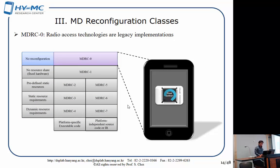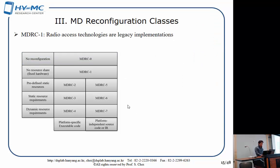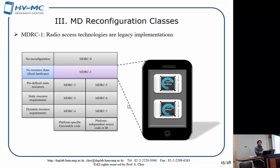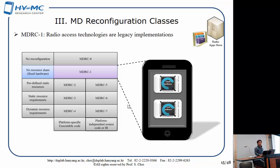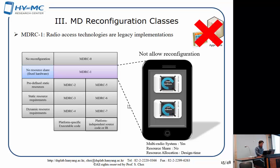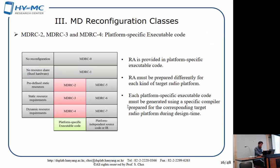Class 0 is equipped with a fixed hardware modem chip, so software download is not allowed. Class 1 is equipped with multiple fixed modem chips — say, one for WCDMA, one for LTE, one for Wi-Fi — and still does not allow software download. From class 2 and below, the mobile device allows software download. Classes 2, 3, and 4 use executable code. Classes 5, 6, and 7 download platform-independent source code or platform-independent intermediate representation.